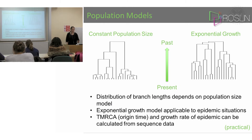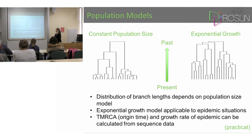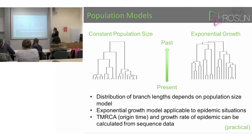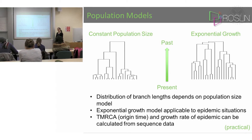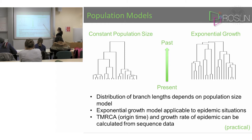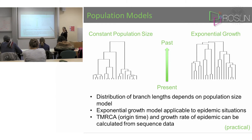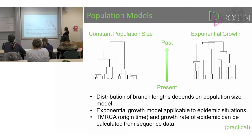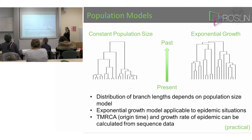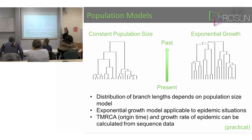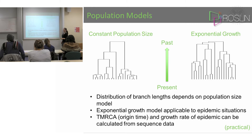The distribution of branch lengths depends on the population size. On the left we have a constant population size, and on the right we have a population which is exponentially growing in time — small in the past and large in the present. So in the past we have short branch lengths, and towards the present we have longer branch lengths. Although the actual topology of the trees is the same, the distribution of the branch lengths is different.